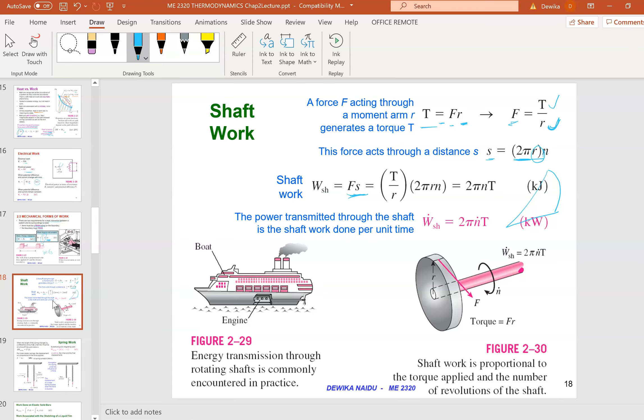You plug in all the values, so work shaft is equivalent to 2πnT where n is the number of rotations and T is the torque. To calculate the power, you divide by time. That is the shaft work.